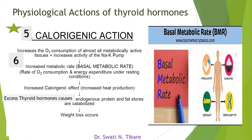The calorigenic action increases the metabolic activity of all cells and is responsible for increasing the basal metabolic rate (BMR) — the rate of oxygen consumption and energy expenditure under resting conditions. Even at rest, some amount of oxygen is used and actions continually occur in the body requiring energy. In the presence of thyroid hormones, BMR is increased, causing increased heat production and higher body temperature.